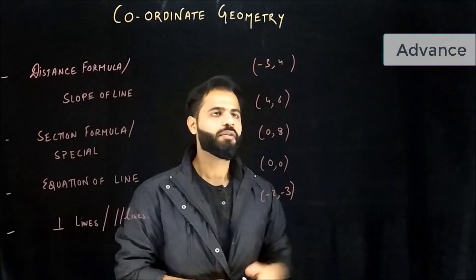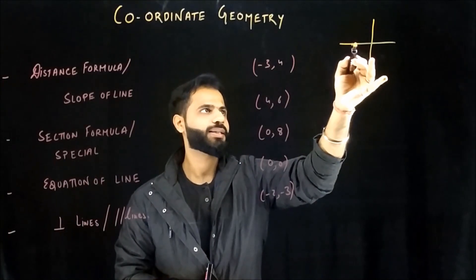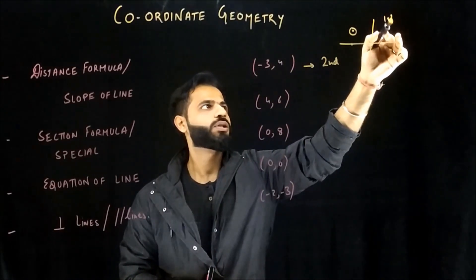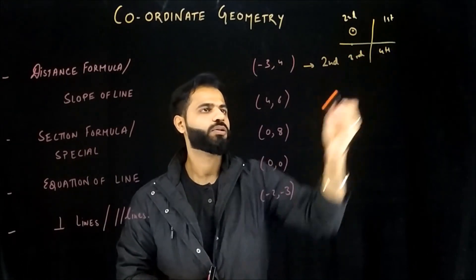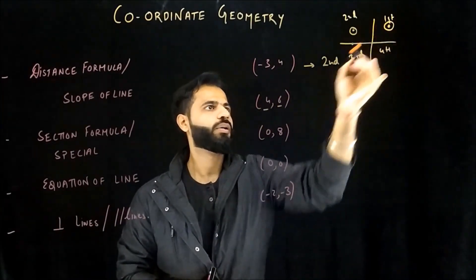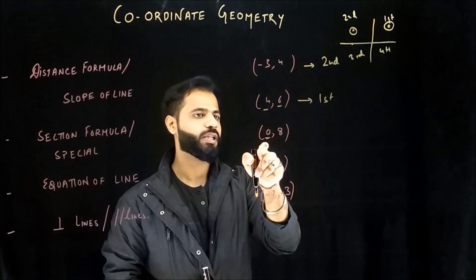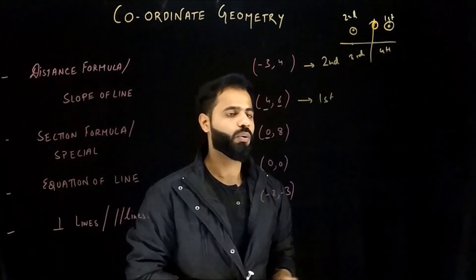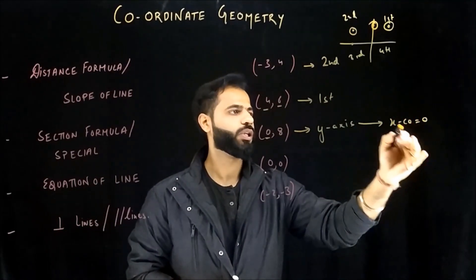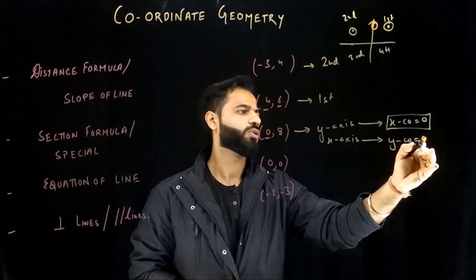Minus 3 and 4: if I draw a rough sketch, minus 3 means negative on the x-axis and positive on the y-axis — so it's the second quadrant. For 4 comma 6: positive x and positive y, so first quadrant. For 0 comma 8: you're not moving right or left because x is 0, so this lies on the y-axis. Remember: for a point on the y-axis, x coordinate equals 0. Similarly, if a point lies on the x-axis, the y coordinate equals 0.